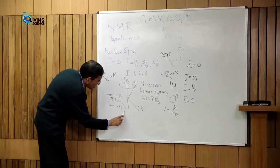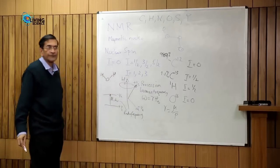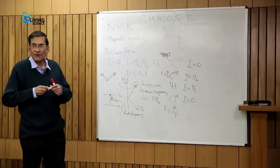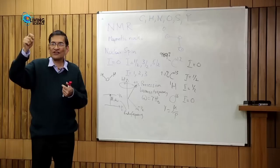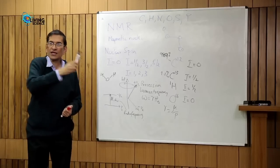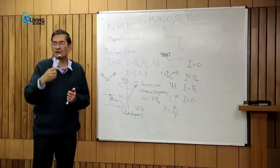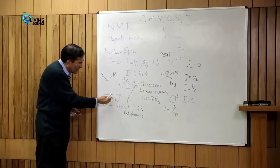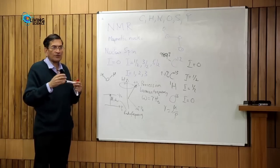This frequency lies in the radio frequency region — that is why you get 100 MHz, 200 MHz, 300 MHz. In the old days when we had radios, you would tune to a frequency; some station comes at 25 MHz. So everyone was familiar with megahertz. If you shine radio frequency radiation on the nuclear spin system, it will absorb this energy — that is what we call nuclear magnetic resonance absorption, which is just a form of spectroscopy.